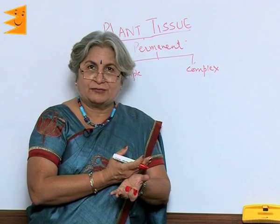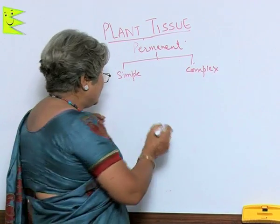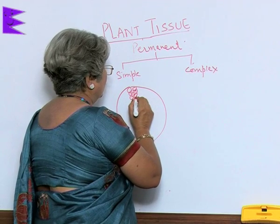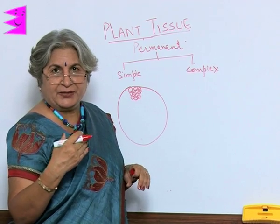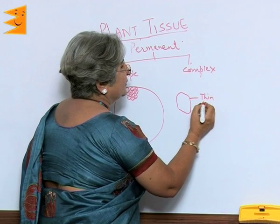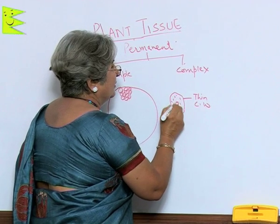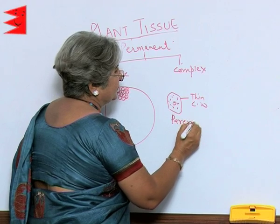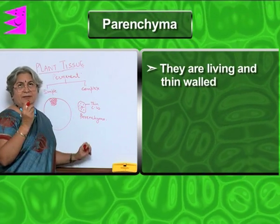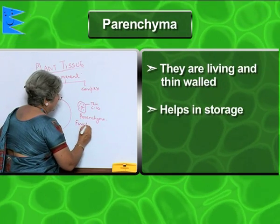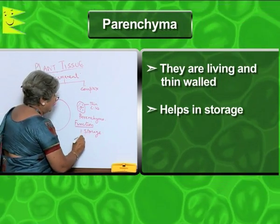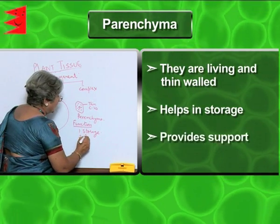If we cut a slice from the stem or the root, what we will find is that just below the epidermis there is a kind of packing tissue. These packing cells can be many layered — they are simple cells which are not very specialized and they have thin cell walls. This kind of tissue is called parenchyma. They are living and thin-walled, and their main function is storage — storage of food, storage of other compounds. To some extent it also provides support.